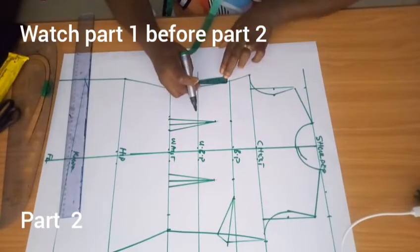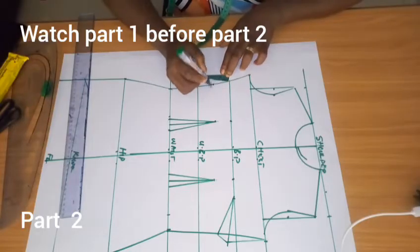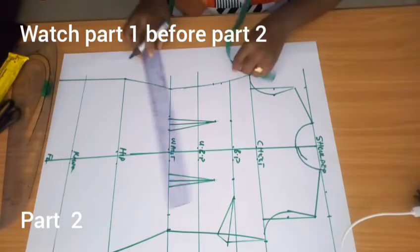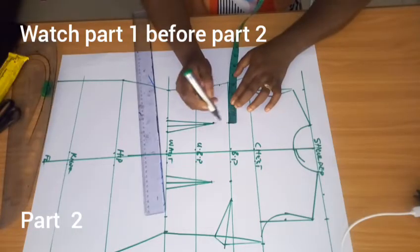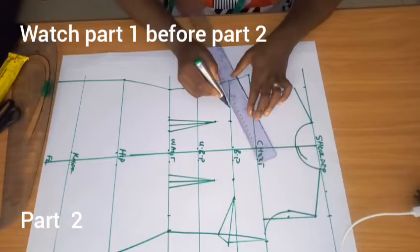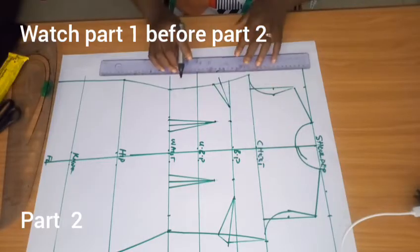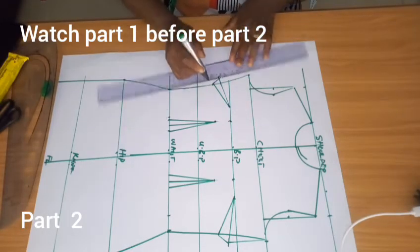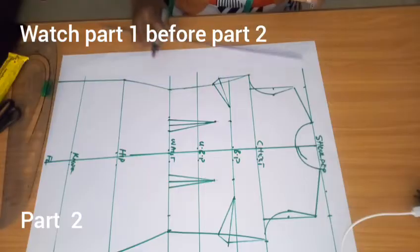On this point, I'll also input my bust darts. From the nipple point, you come down—this is 1.5—you also come by 1.5. That is if you are making not too much serious a dress, just a simple dress.